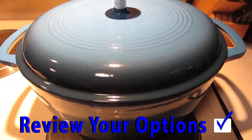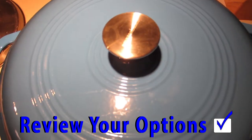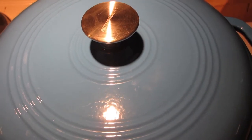Hello, review your options. Today we are looking at the 7.5 quart Amazon Basics Dutch Oven. This is enamel covered cast iron.